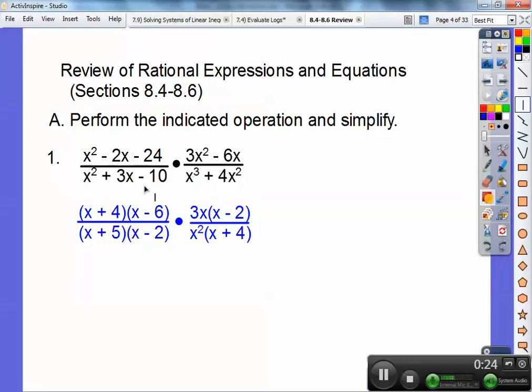Factors of negative 10 that add to 3 are positive 5 times a negative 2. Here I can GCF a 3x out, and here I can GCF an x squared out. Then you can see all the common factors on top and on bottom, so I can cancel them out. And there's my final answer.